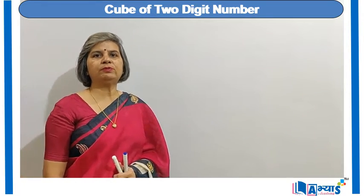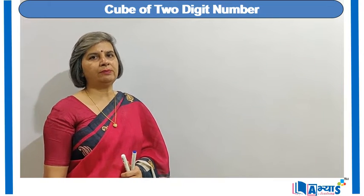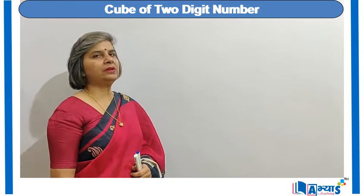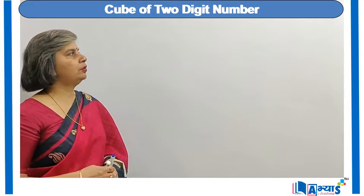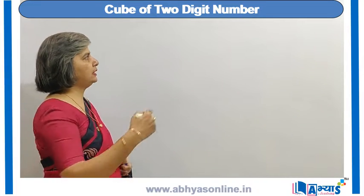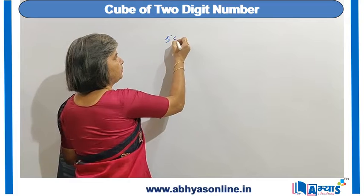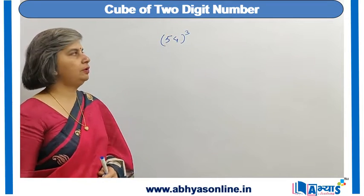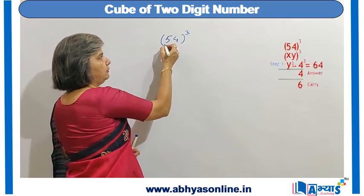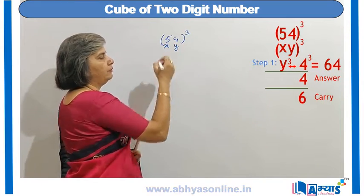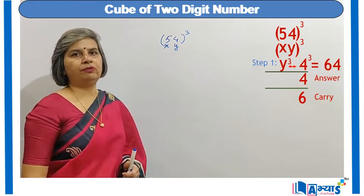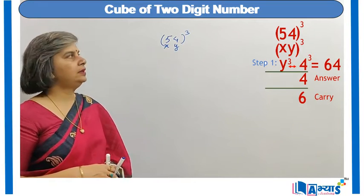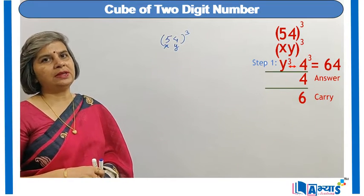Now I am going to discuss the concept of finding the cube of a two-digit number using the Anurupiana method. In this method we find the cube of a two-digit number. Let us take the example of 54. I will take 5 as x and 4 as y — the digit at the tens place is x and the digit at the units place is y.